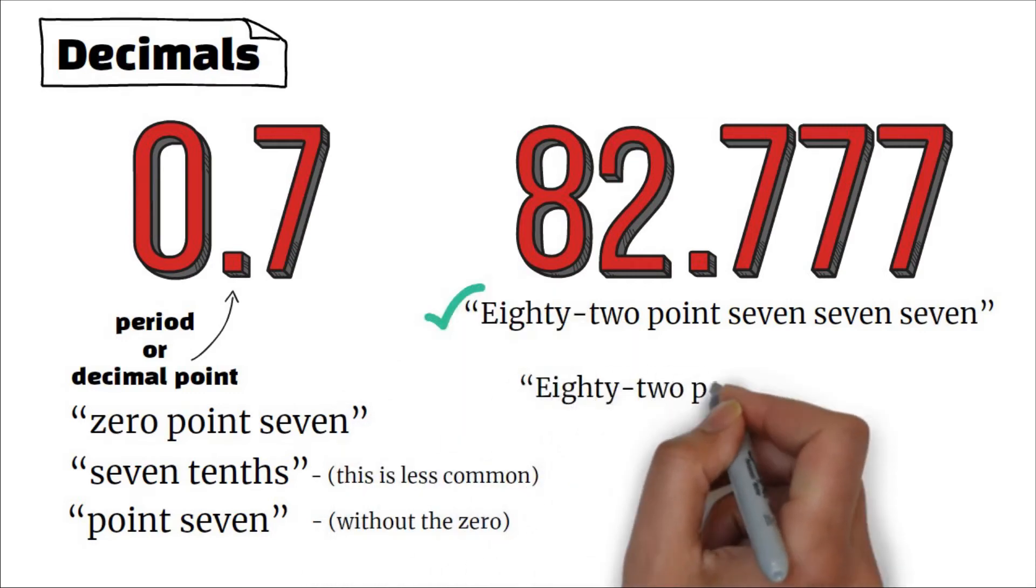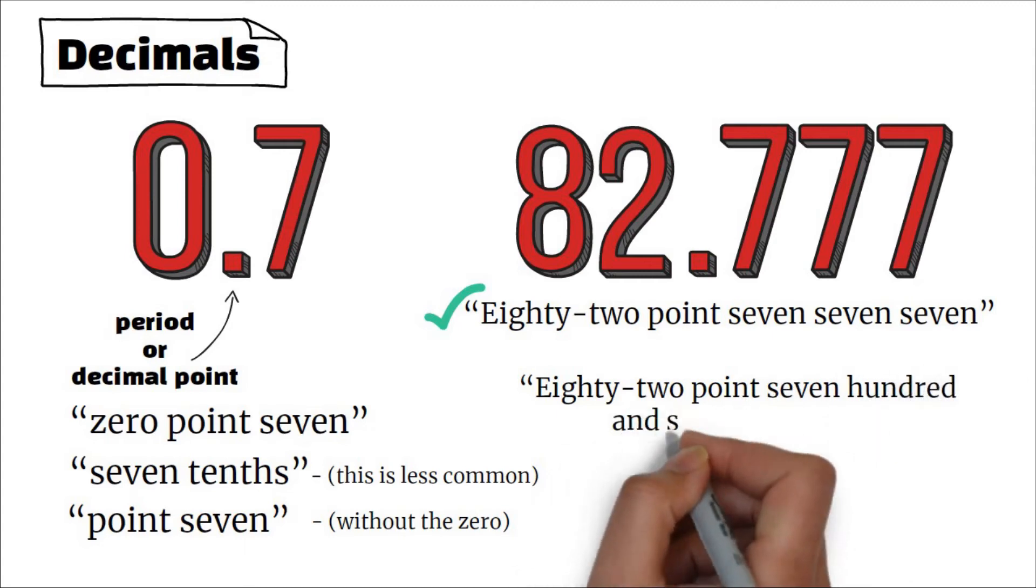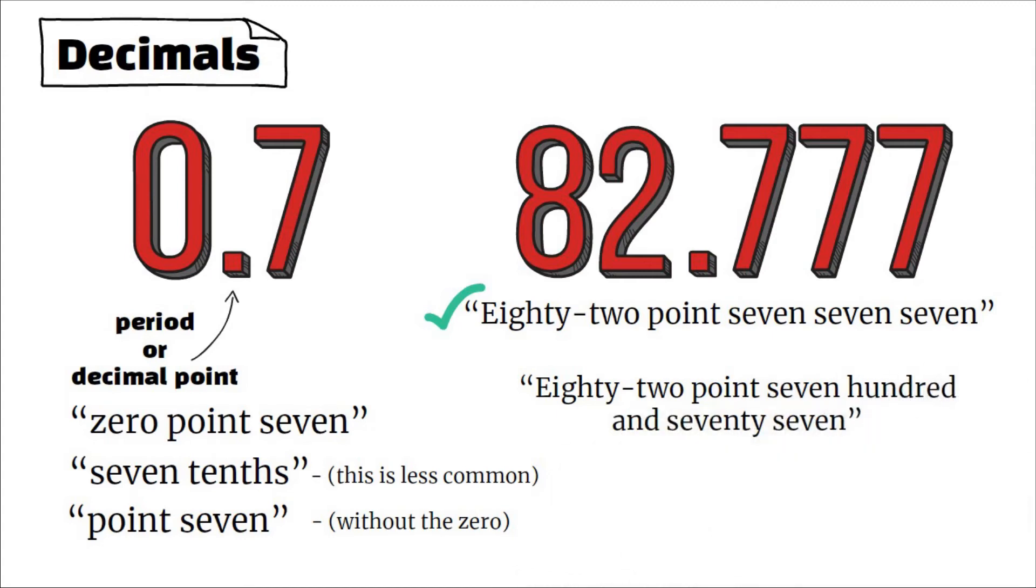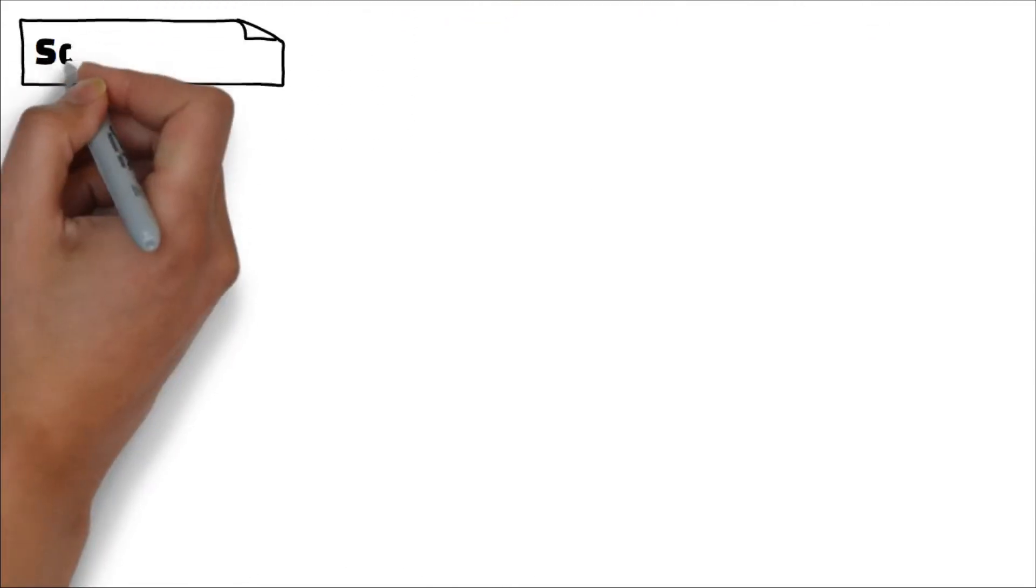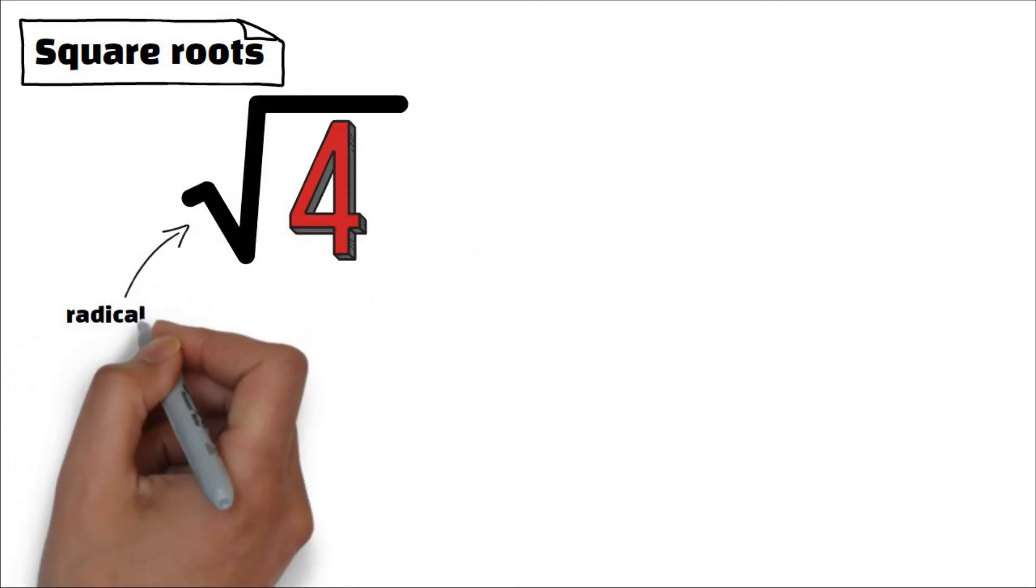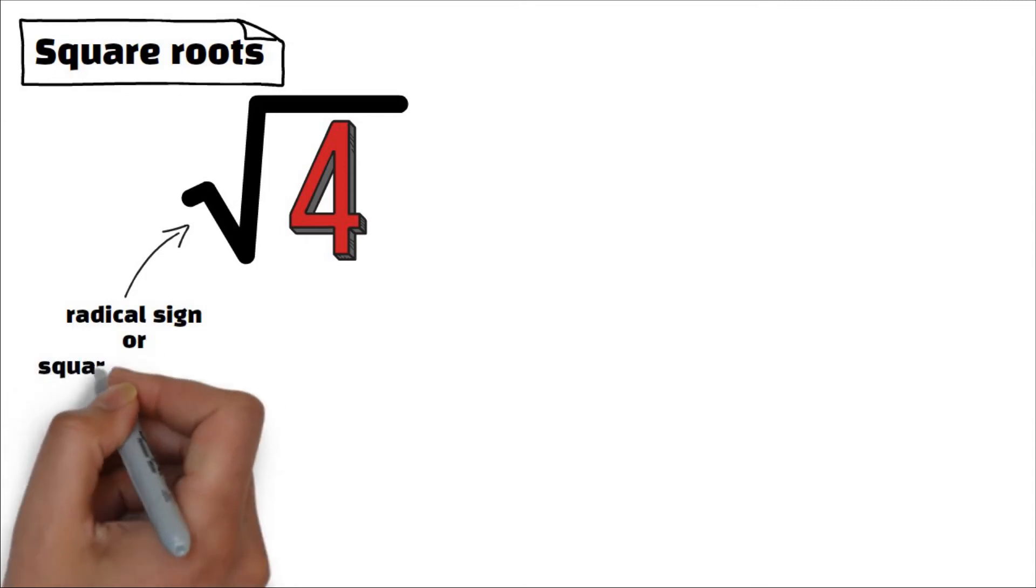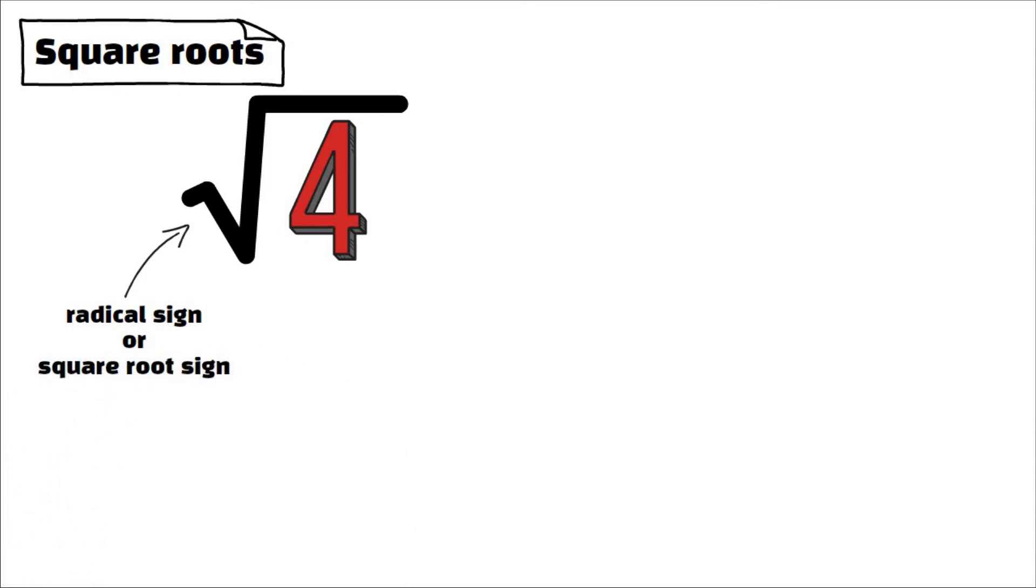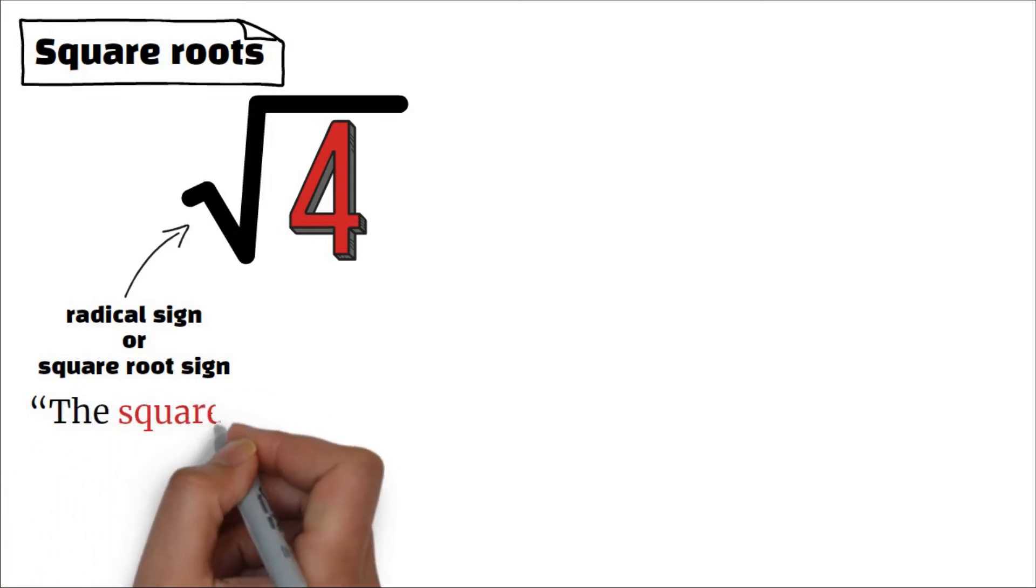All right, let's move on to square roots. The first symbol you see is the radical sign, sometimes also called the square root sign. This is how we read this: the square root of four.